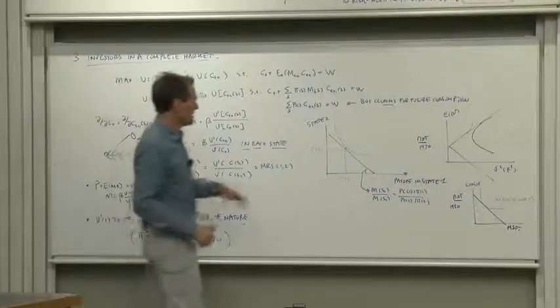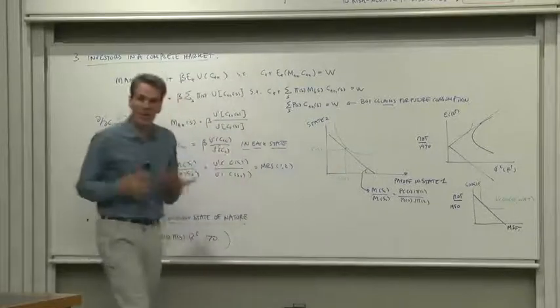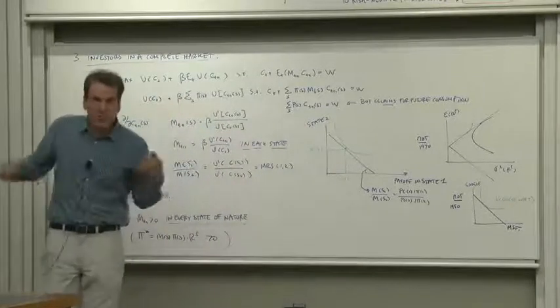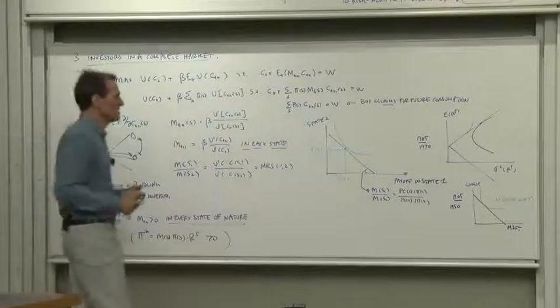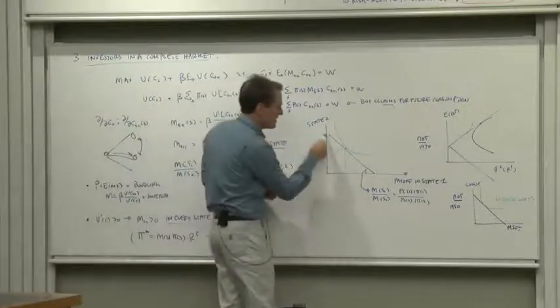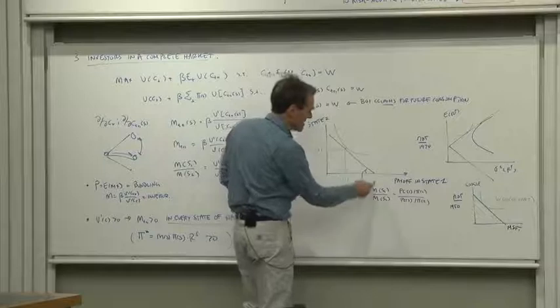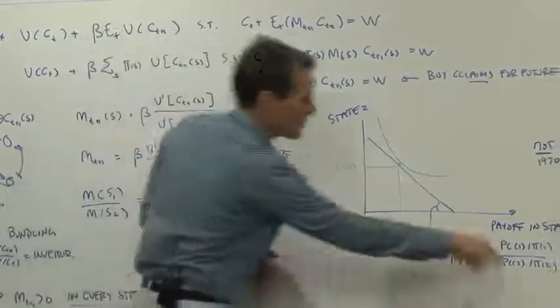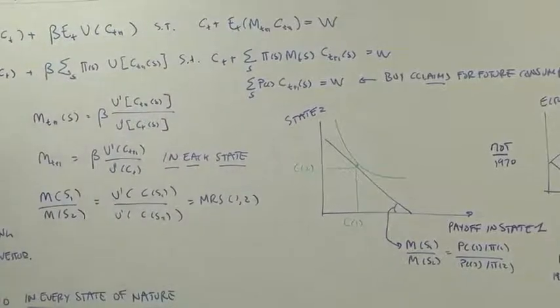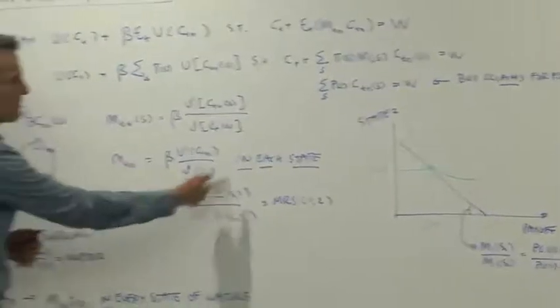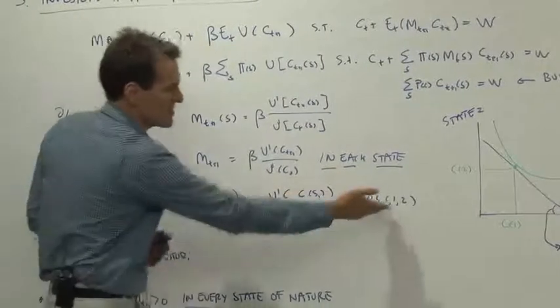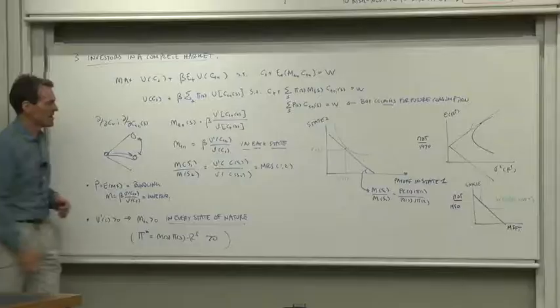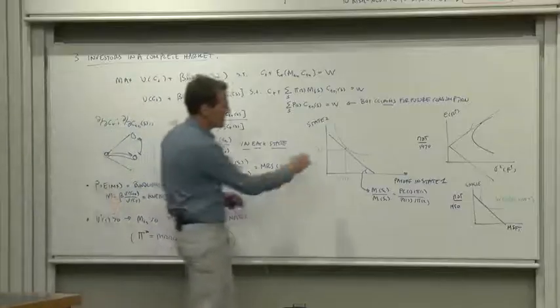And I've graphed that here. This is the underlying way we think now about investors choosing among risky possibilities. The price line that they face is the ratio of discount factors or contingent claims prices divided by probabilities. And then the statement that marginal utility equals this marginal rate of substitution equals that price ratio just shows up like this.